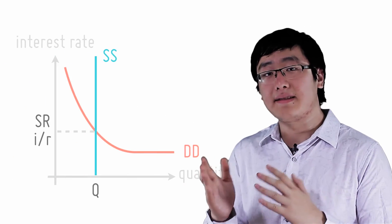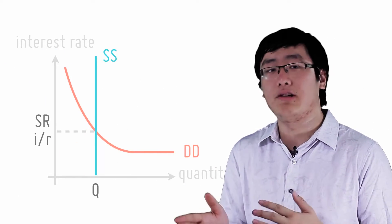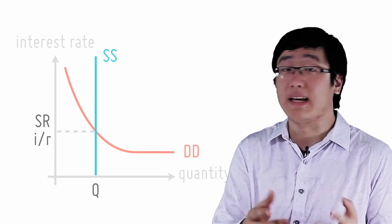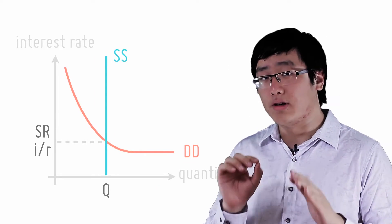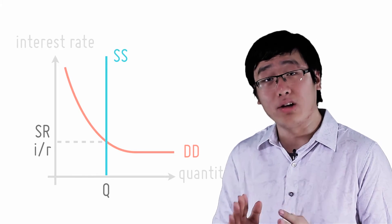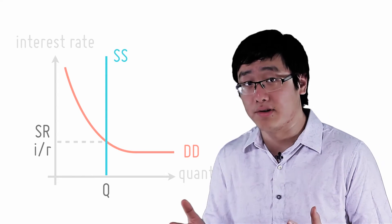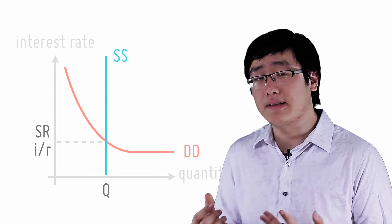If prices are sticky in the short run, then when money supply increases—and we suppose that it increases this time—interest rates decrease. The increase in money supply does not trigger an increase in price levels in the short run because prices are sticky in the short run.